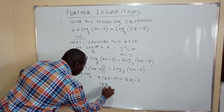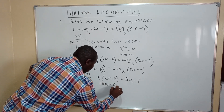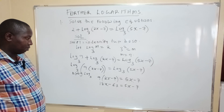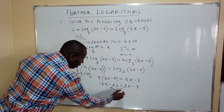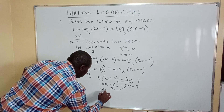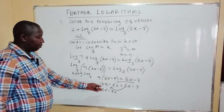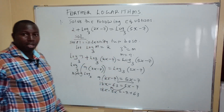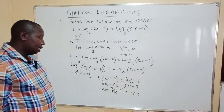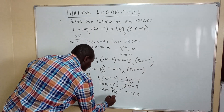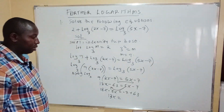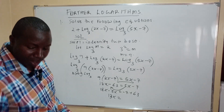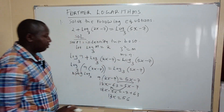Opening the bracket: 9 times 2x gives 18x, and 9 times 7 gives 63, so we have 18x minus 63 equals 5x minus 7. Bringing like terms together: 18x minus 5x on the left gives 13x, and bringing minus 63 to the right side gives plus 63. So 13x equals negative 7 plus 63, which equals 56.